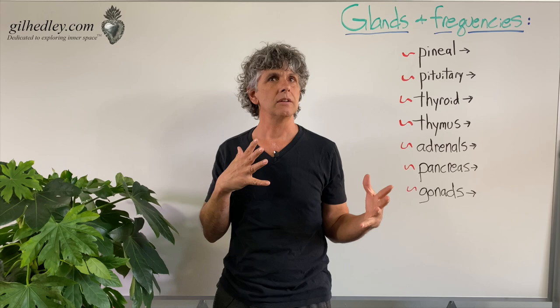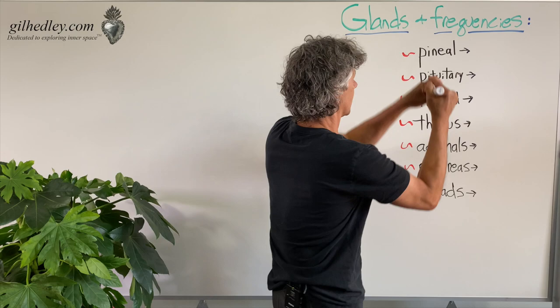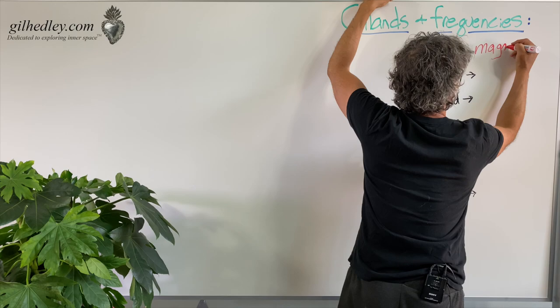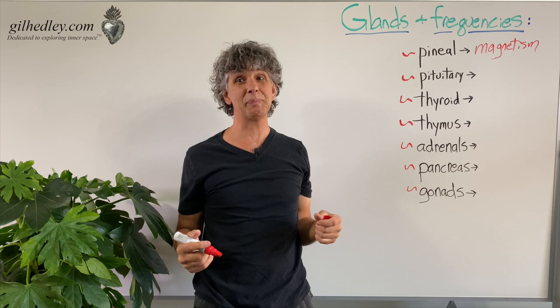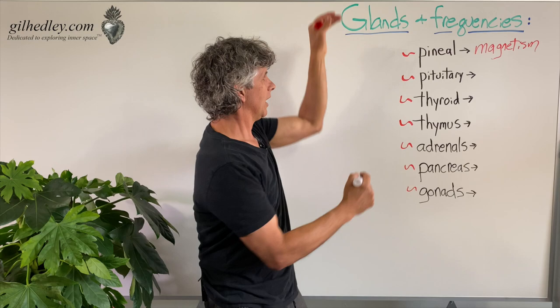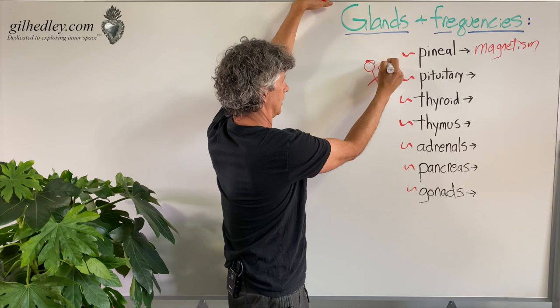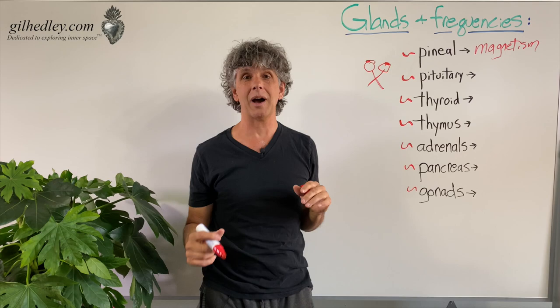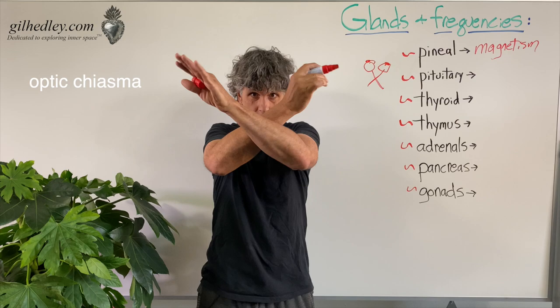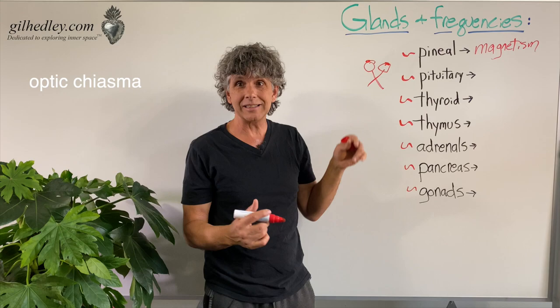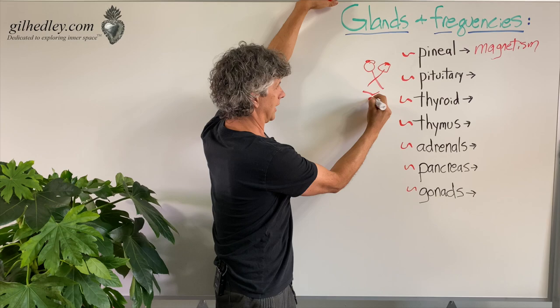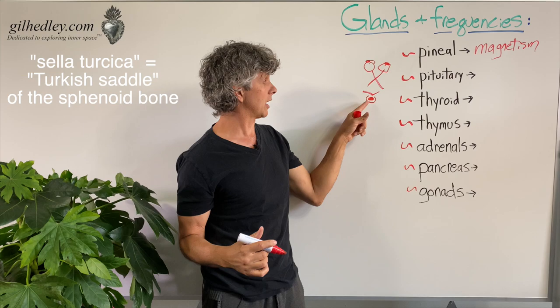What about the pituitary? The pituitary gland — X marks the spot. Here are your eyeballs, and these are the optic nerves. We call it the optic chiasma, which basically means the optic X — the Greek letter chi. The pituitary gland actually lives in a little bony bucket in your sphenoid bone called the sella turcica, directly underneath the place where your optic nerves cross over.